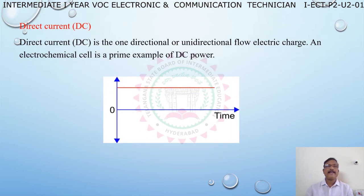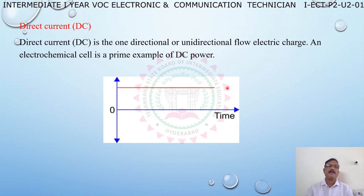Direct current is the unidirectional, or one-directional, flow of electric charge. An electrochemical cell is a prime example of DC power. Direct current flows in one direction, unlike AC which changes direction periodically. This is direct current.